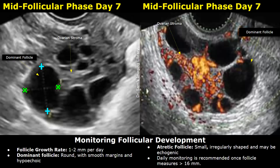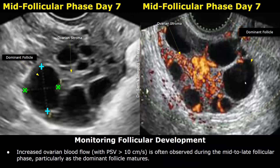The dominant follicle is round with smooth margins and is hypoechoic. An atretic follicle is a regressing follicle — it is small, irregularly shaped, and may be echogenic. Once a follicle reaches 16 millimeters in diameter, daily ultrasound monitoring is recommended. Increased ovarian blood flow with a peak systolic velocity of 10 centimeters per second or greater seen on Doppler is a good indicator of impending ovulation, often observed during the mid to late follicular phase from day six onwards.